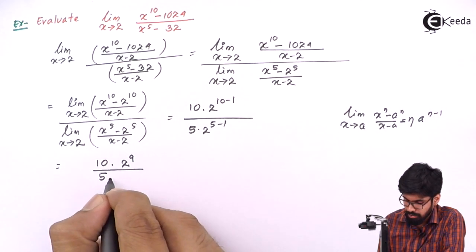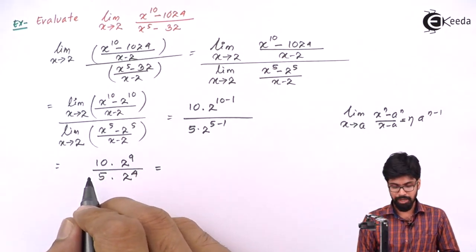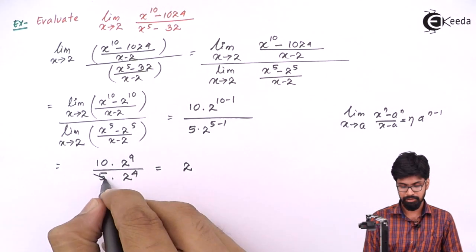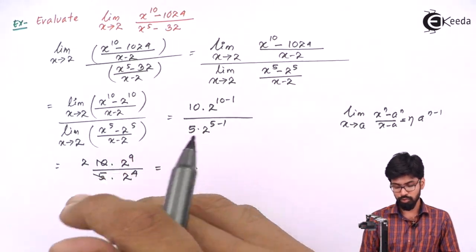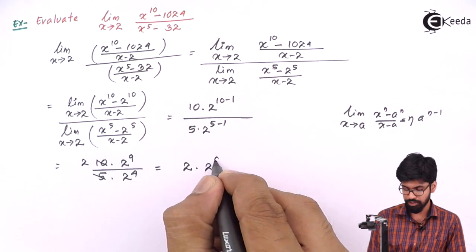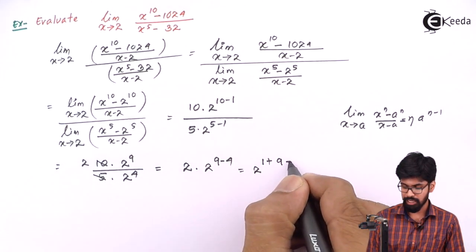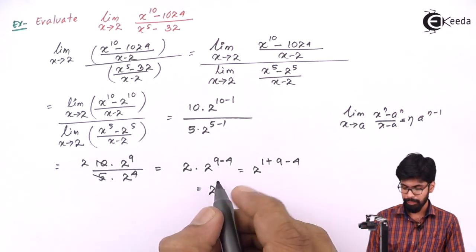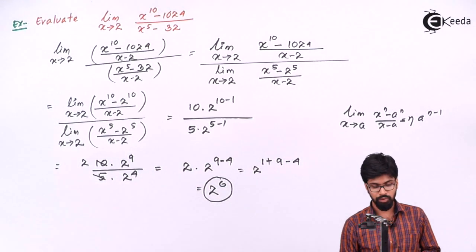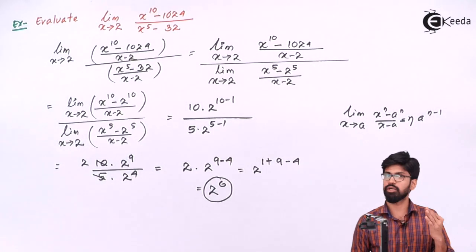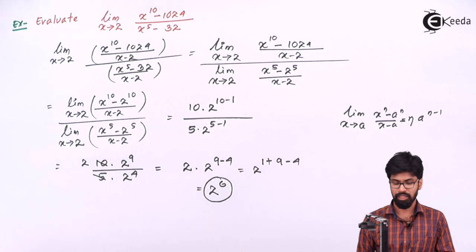So we have 10 multiplied by 2 raise to 9 upon 5 multiplied by 2 raise to 4. The 10 and 5 cancel giving 2, and 2 raise to 9 upon 2 raise to 4 equals 2 raise to 9 minus 4, that is 2 raise to 5. Combined with the factor of 2, this gives 2 raise to 6. So the limit x tends to 2 of x raise to 10 minus 1024 upon x raise to 5 minus 32 equals 2 raise to 6. Thank you.